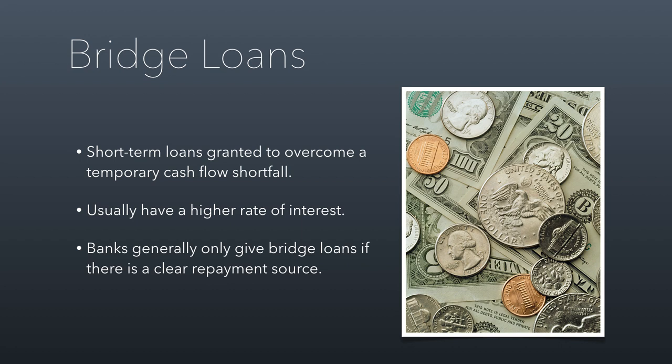Bridge loans are short-term loans usually given to overcome a temporary cash shortfall, measured in months rather than years. They come with a higher rate of interest, and banks are usually only willing to give them if there's a clear repayment source. For example, if you have a big fundraiser in May but are running short on payroll cash now, you could take out a bridge loan — as long as you can show that the May fundraiser reliably brings in the same amount each year. They're not the most efficient loans in terms of cost, but they are handy in an emergency.